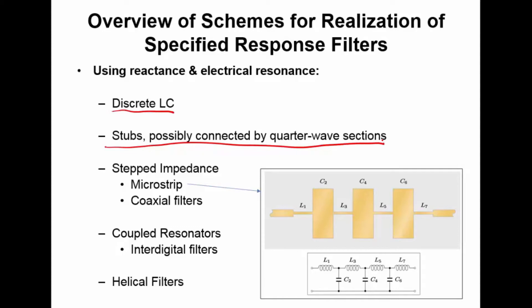Another way to do this is using a technique known as stepped impedance, and there are two basic forms: microstrip and coaxial filters. Here I'm showing you the microstrip form of a stepped impedance filter. The way this works is: here's the input, here's the output, and you have a set of transmission lines.